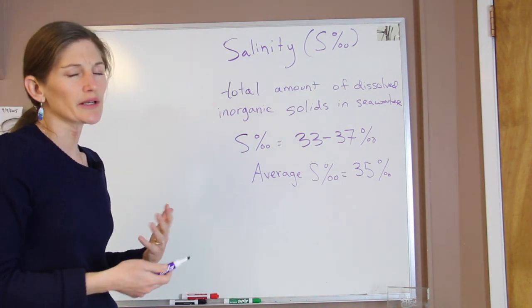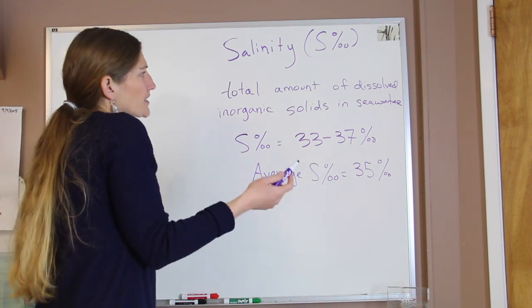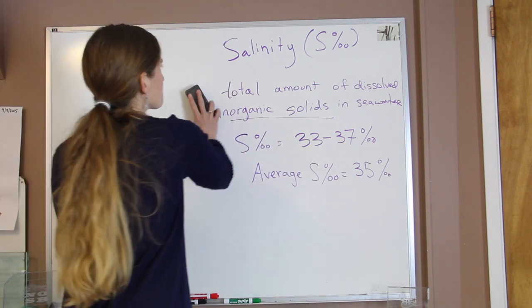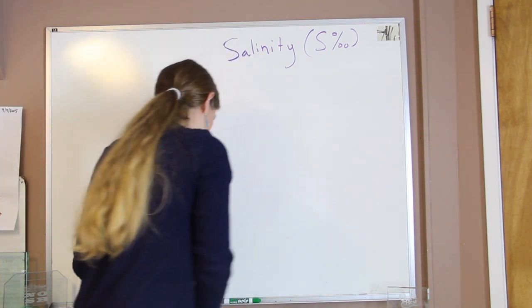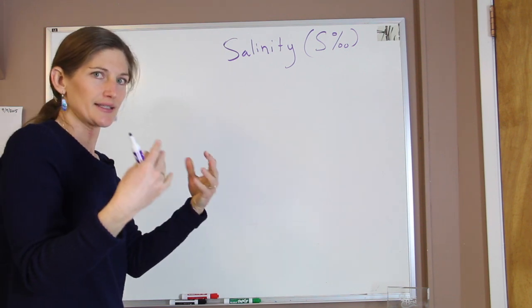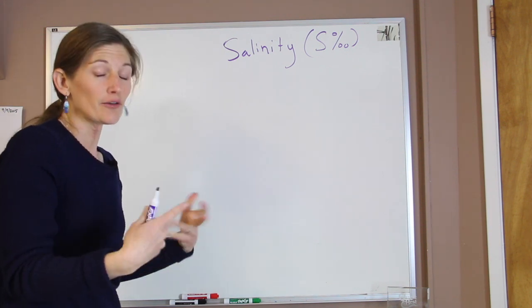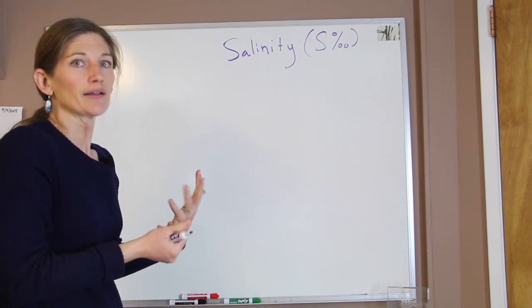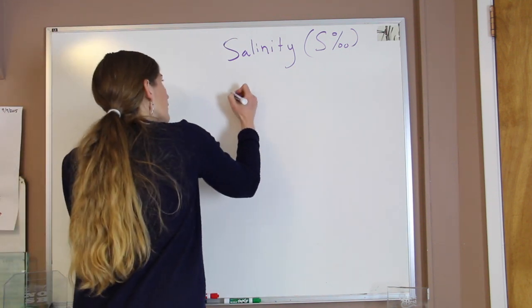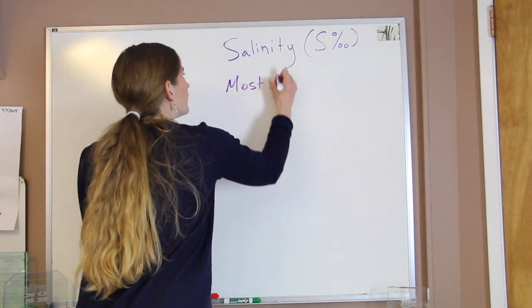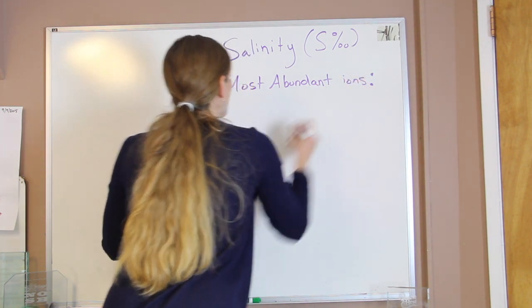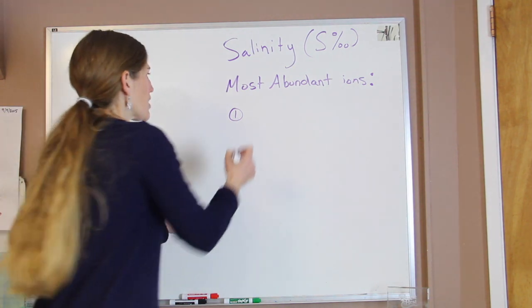When we want to start understanding what salinity is, the next question is: what are these solids that make up our seawater? If we were to take a whole bucket of seawater, let it evaporate away, and look at all the residue left behind, we find seven major ions make up the majority of those salts. The most abundant — the very first one, which comes as no surprise — is chlorine.